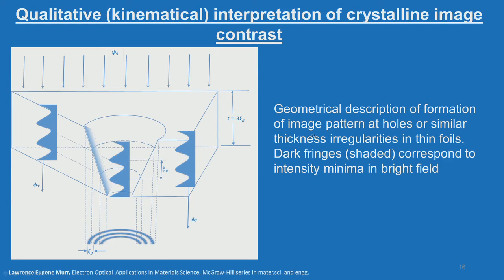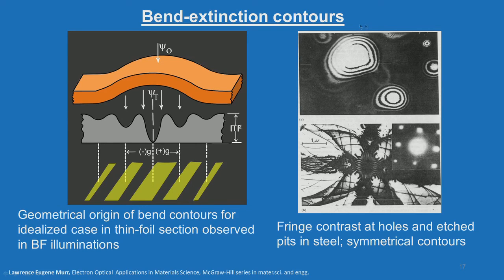This is a geometrical description of the formation of the image pattern at holes or similar thickness irregularities in thin foils. Dark fringes correspond to intensity minima in the bright field — not zero intensity but a minimum. For bend extinction contours, a bent foil with an electron beam entering produces contours of a specific nature, and in a dark field image the dark lines appear brighter and the bright lines appear darker.